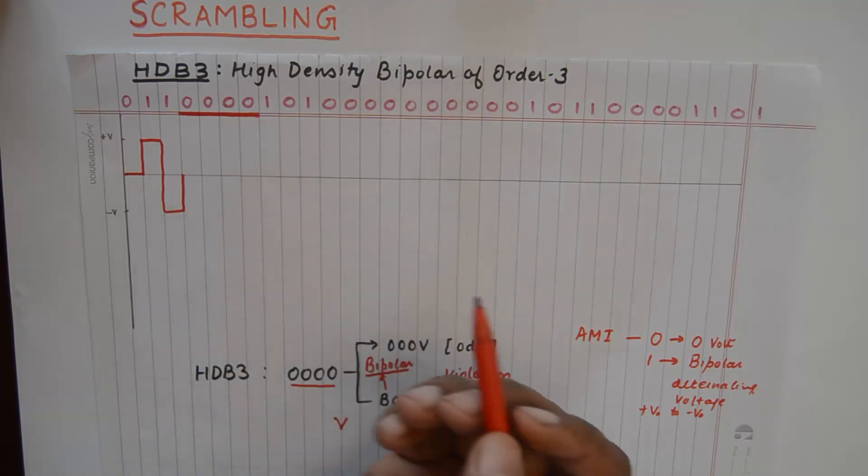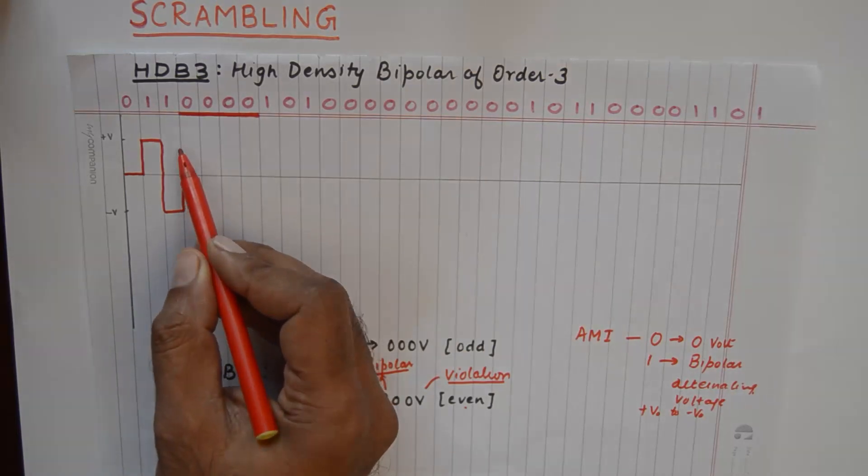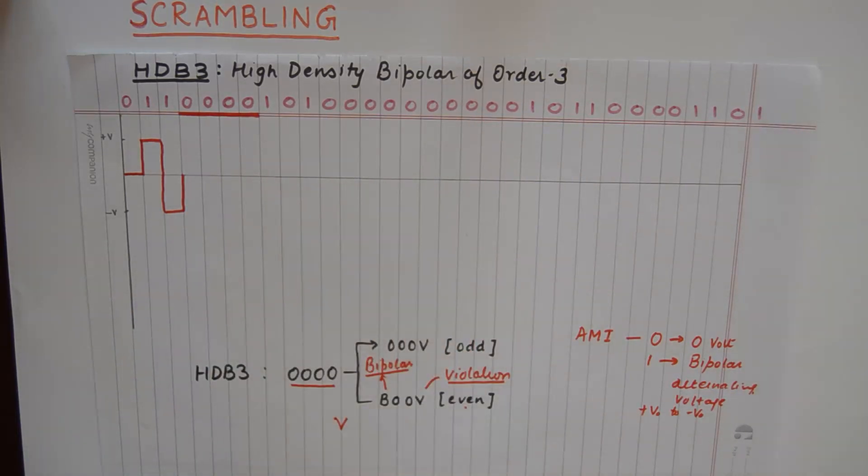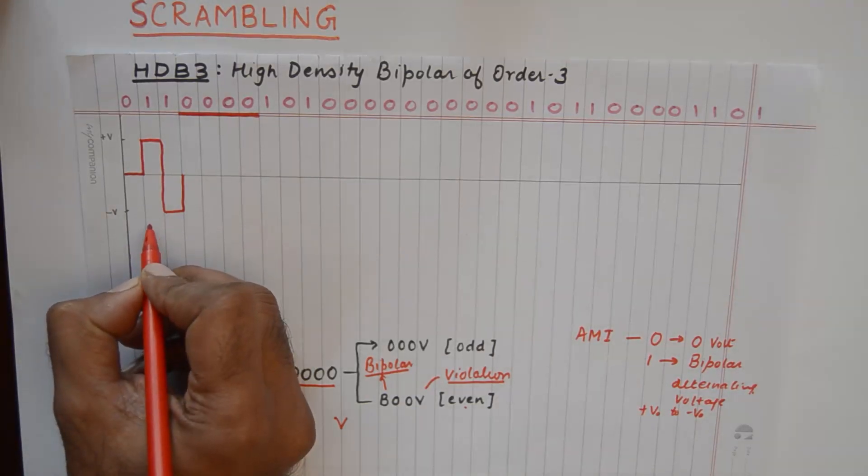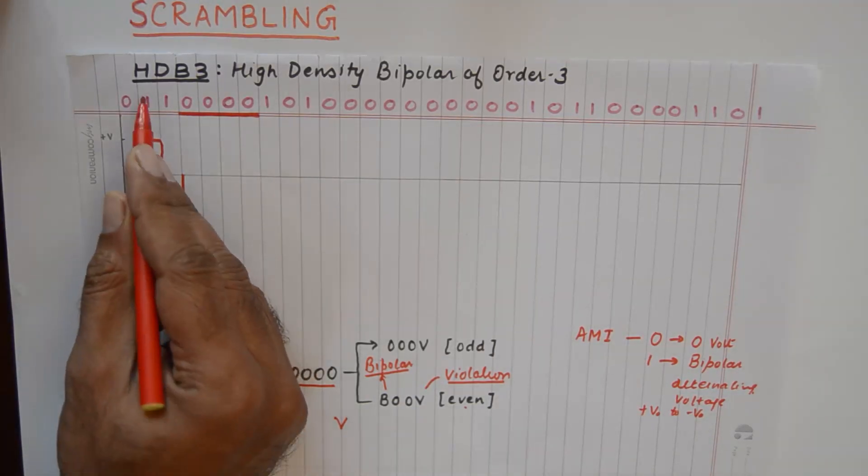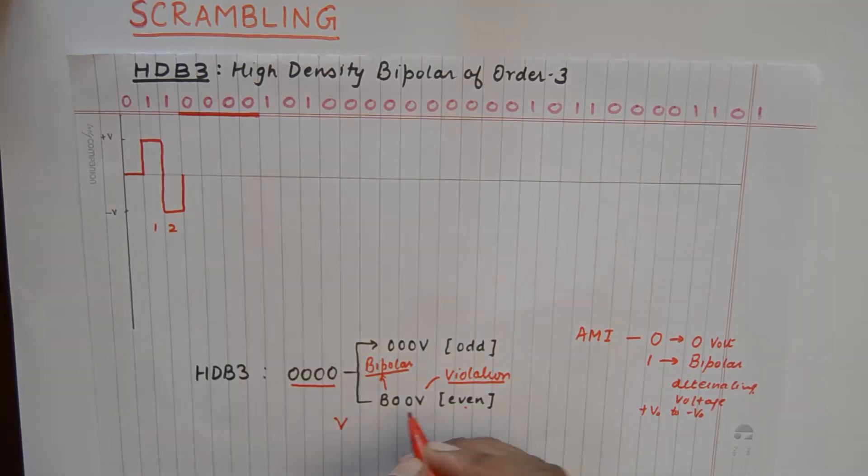And if we were to draw a normal bipolar transition, it would go into a positive V voltage. Now the number of ones here are even. So we have one, two. So we will follow this.